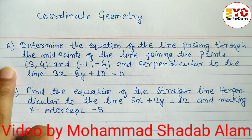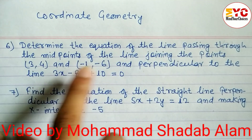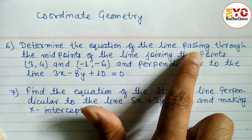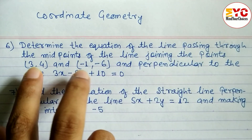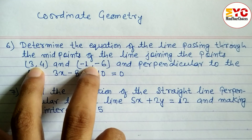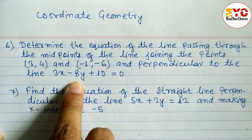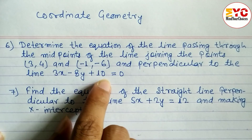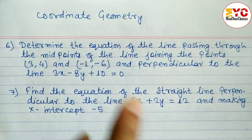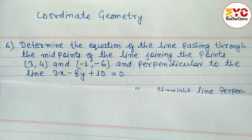Now look at question number six: determine the equation of the line passing through the midpoint of the line joining two given points. We have to find the equation of a line which passes through that midpoint and is perpendicular to the line 3x minus 8y plus 10 equals zero.